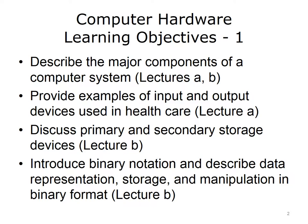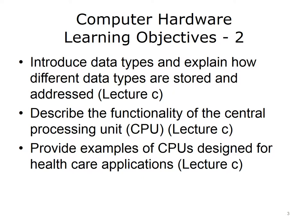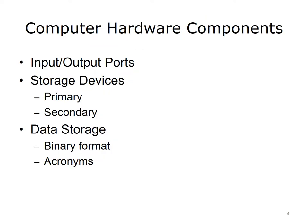The learning objectives for this unit, Computer Hardware, are to describe the major components of a computer system, provide examples of input and output devices used in healthcare, discuss primary and secondary storage devices, introduce binary notation and describe data representation, storage and manipulation in binary format, introduce data types and explain how different data types are stored and addressed, describe the functionality of the CPU, and provide examples of CPUs designed for healthcare applications. In this lecture, we will continue our discussion of computer hardware components, examine various types of input and output ports, discuss several types of storage devices, differentiate between primary and secondary storage, and explain how data is stored in binary format.